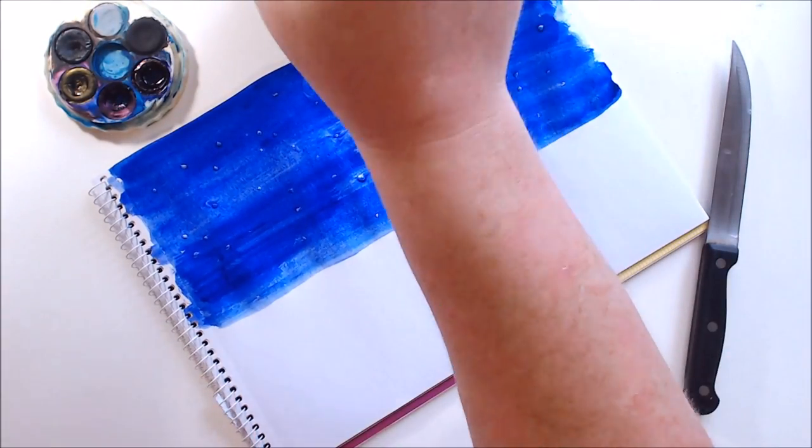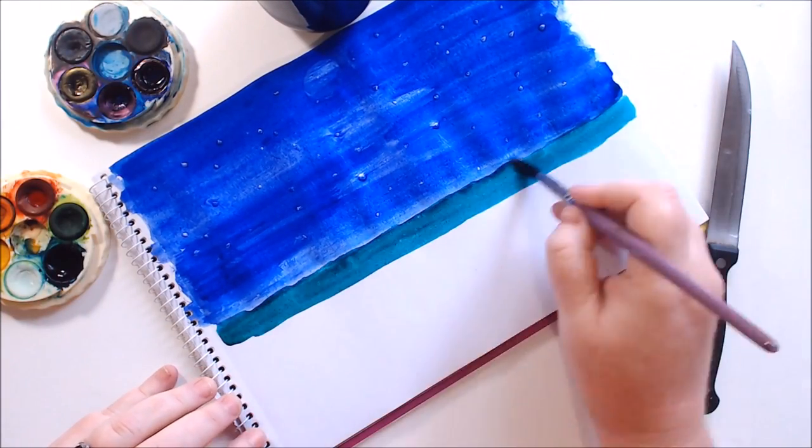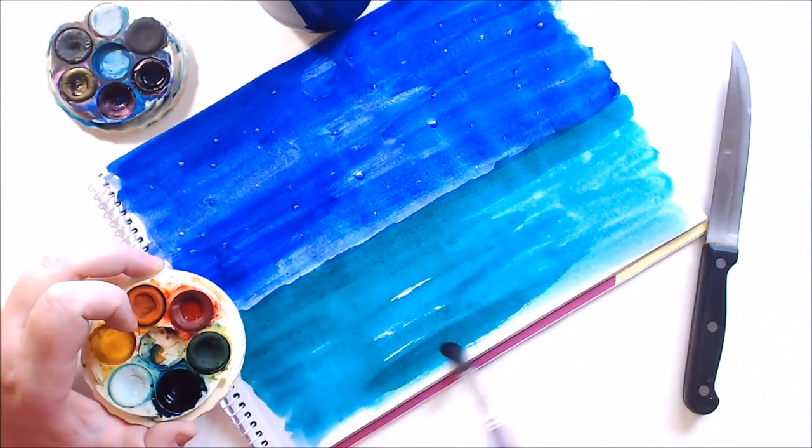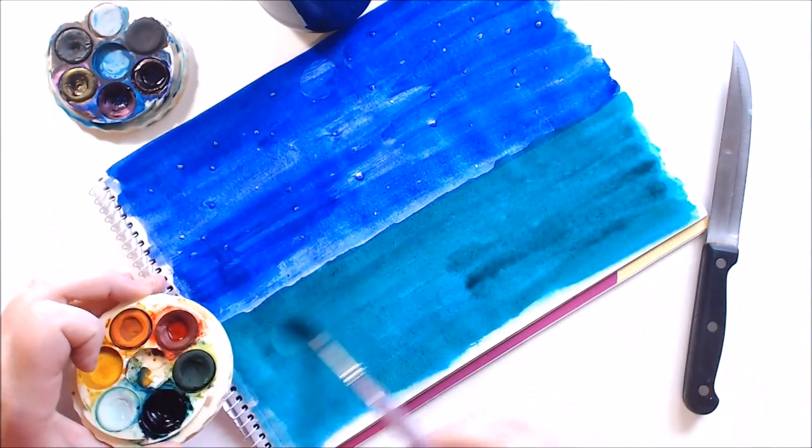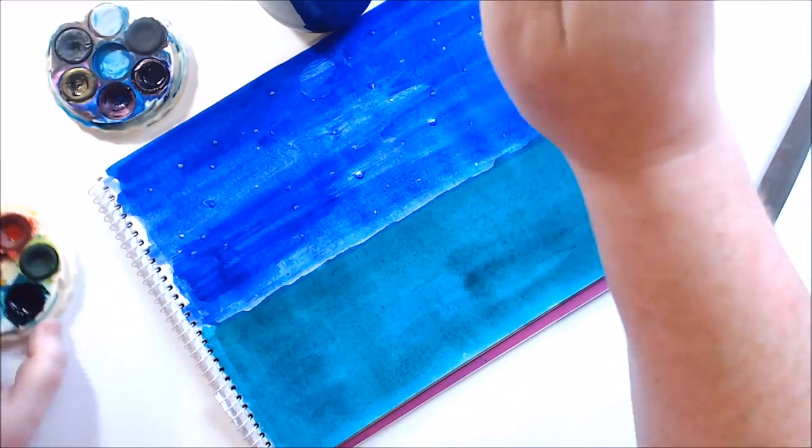Just paint over the entire thing in blue. You don't have to worry about leaving spaces for the stars or anything. And then you can do your grassy sort of lawn at the bottom or the ground. I'm just making this very very simple just so I can show you the effect.